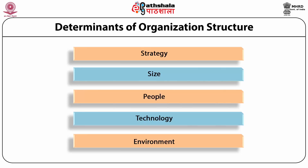Size: an organization's size considerably influences its structure. Large organizations tend to have more specialization, more departmentalization, more vertical levels and more rules and regulations compared to small organizations. People: skilled and professional people can be better managed by a structure that satisfies their need for autonomy, less direction and control, and power of decision making. Technology: large batch productions have a mechanistic structure, while an organic structure is more suitable for forms with unit and small batch technology. Environment: firms operating in a static environment tend to have a rigid structure, whereas those in a dynamic environment tend to have a flexible and adjustable structure.